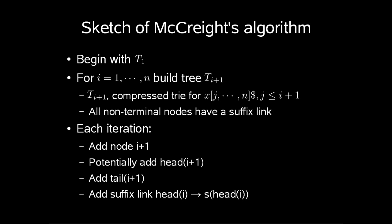Here's a quick sketch on how McCreight's algorithm will work. We begin with the tree t_1. For i equals 1 up to n, build the tree t(i+1) such that it satisfies t(i+1) is a compressed trie for x[j...n] followed by dollar, j less than or equal to i+1, and non-terminal nodes with the possible exception of head(i) have a suffix link. In each iteration we must add node i+1, potentially also add head(i+1), add tail(i+1), and add the suffix link from head(i) to suffix of head(i).